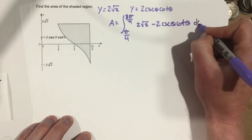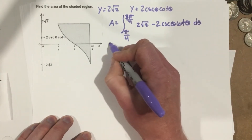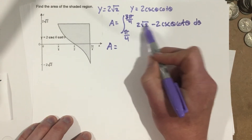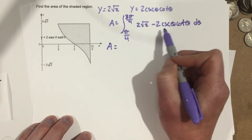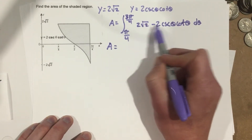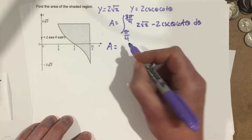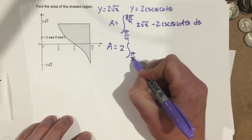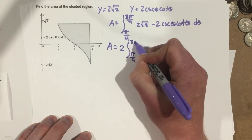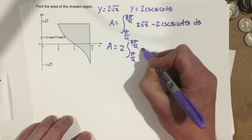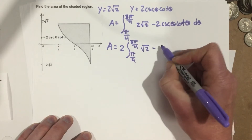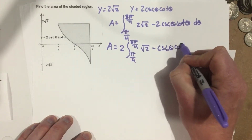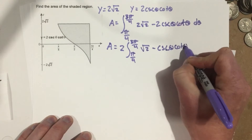This is going to be d theta at the end as well. A is going to equal — I'm going to factor out a 2, since there's a 2 in each term, and I think that's going to make it easier. So I'm going to put 2 out front: integral from pi over 4 to 3 pi over 4 of root 2 minus cosecant theta cotangent theta, d theta.